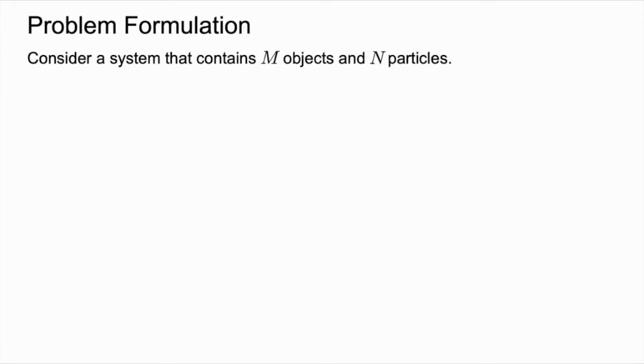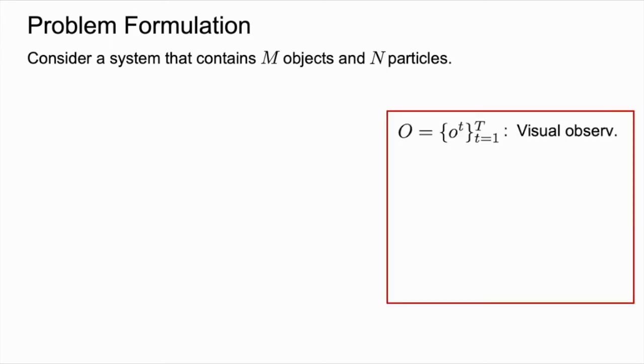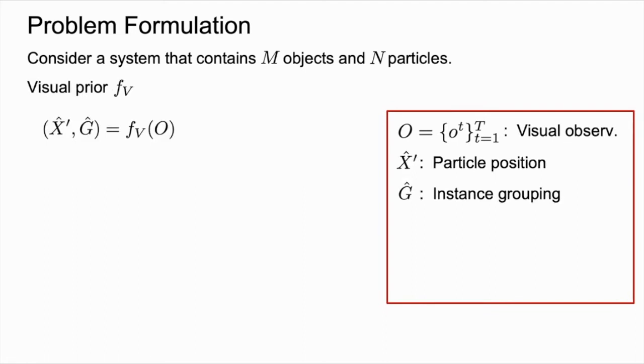To formulate the problem, consider a system that contains M objects and N particles. Given the visual observation O, our model first uses a learned visual prior F_V to obtain a proposal of the particle position X-hat and the grouping information G-hat for each particle, indicating the instance it belongs to. Our model also incorporates a neural dynamics prior F_D that predicts future states based on the history of particle positions and physical properties of the system.